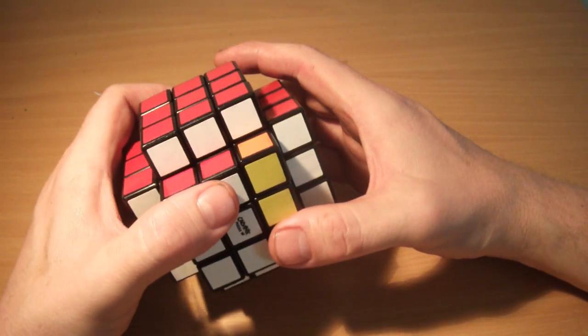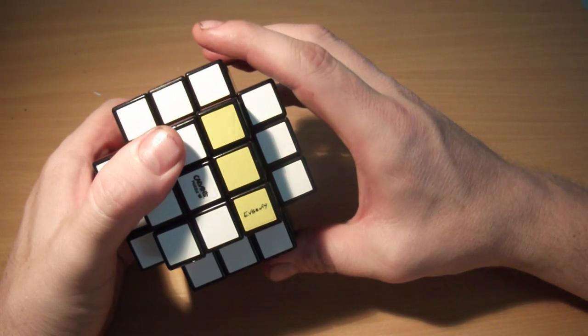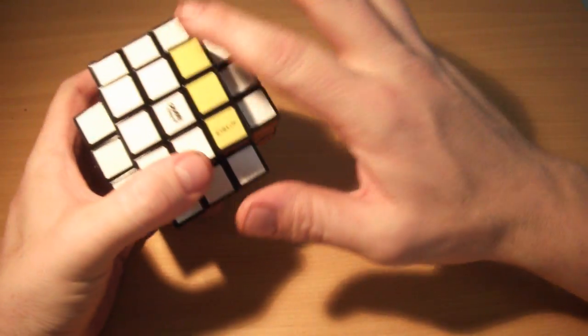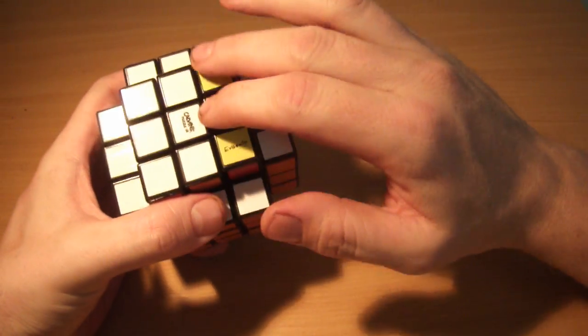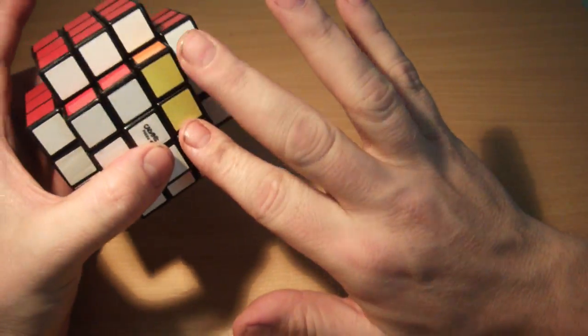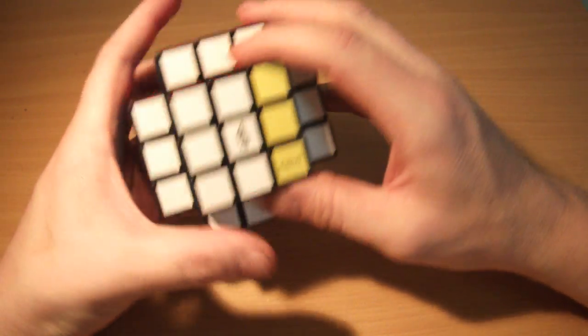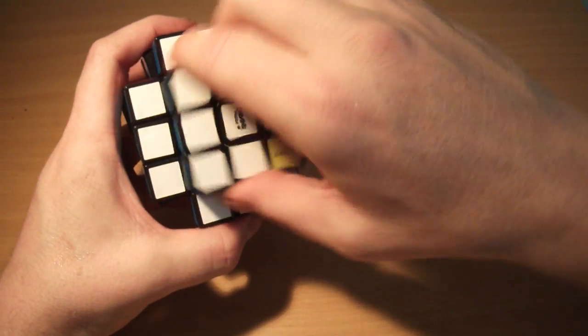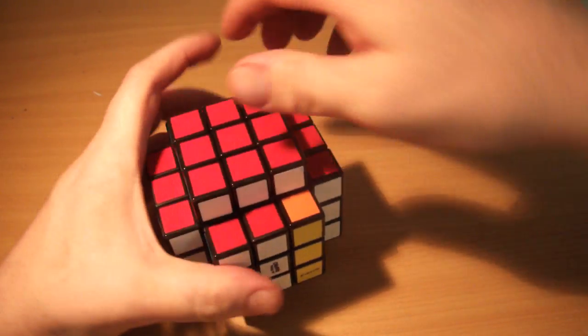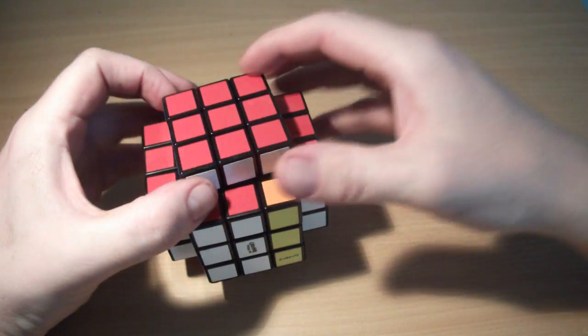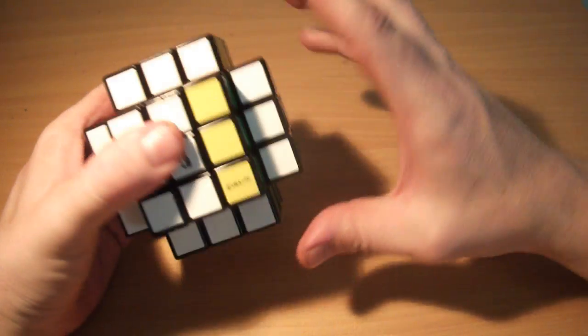So here's what I do. I have one of the sets of the edges on the front face here, and I do this sequence of moves. Now when I say F, I just mean the little square on the front. If I say U, I mean the 3x3 square on the top.